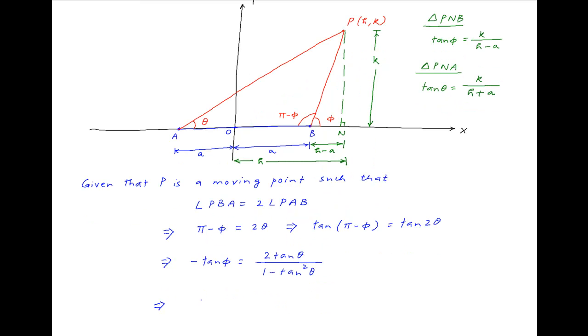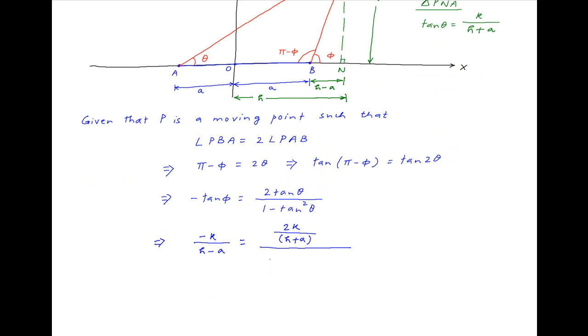Substituting these values of tan theta and tan phi in the result obtained earlier, we get minus k divided by h minus a is equal to 2k divided by (h plus a) divided by 1 minus k squared upon (h plus a) whole squared.